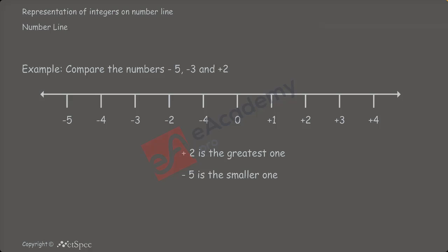On the basis of this, we may write the ascending order or descending order of the numbers. Ascending order is arranging the numbers from the smallest number to the greatest number. In this example, the smallest number is minus 5. Minus 5 is less than the next smallest number, that is, minus 3. And minus 3 is less than the number plus 2. So, the arrangement of these numbers in ascending order is minus 5, minus 3, and plus 2.